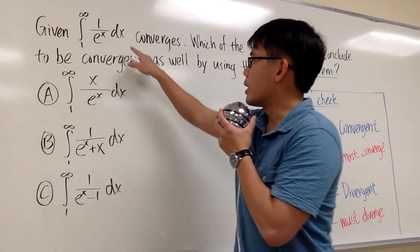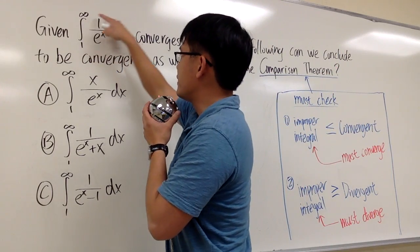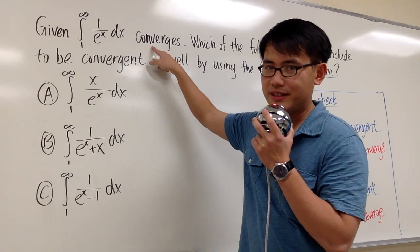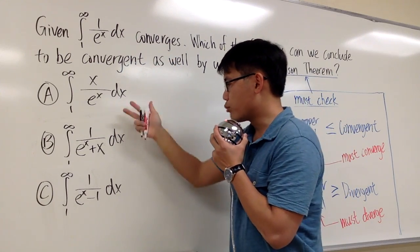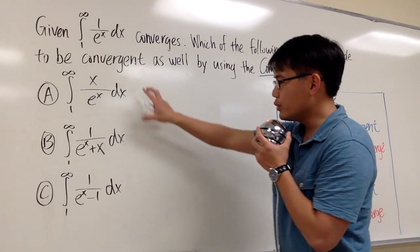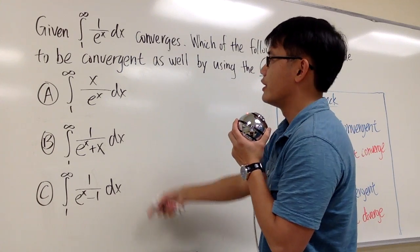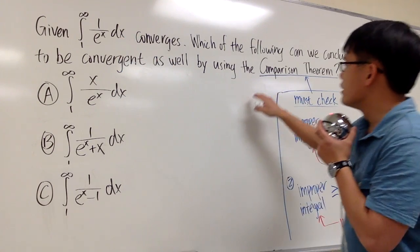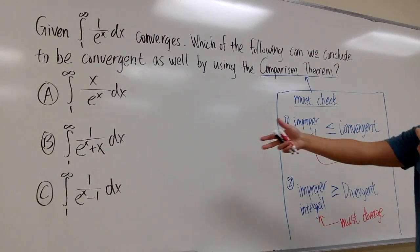We are given this improper integral — the integral from 1 to infinity of 1 over e to the x dx — and it converges. We would like to know which of these other improper integrals also converges. Rather than integrating all of them from scratch, we're going to use this key information together with the comparison theorem to make a decision.